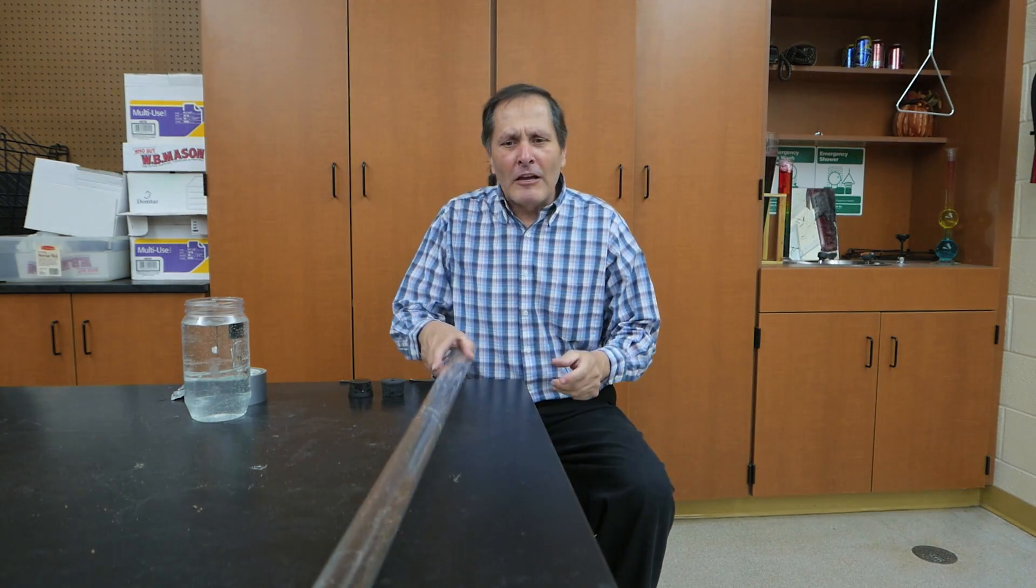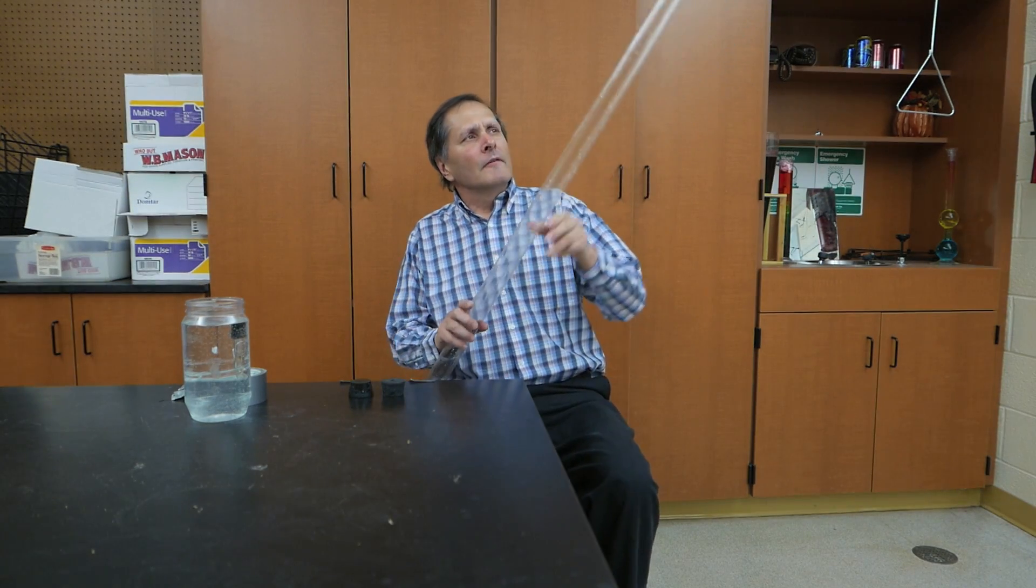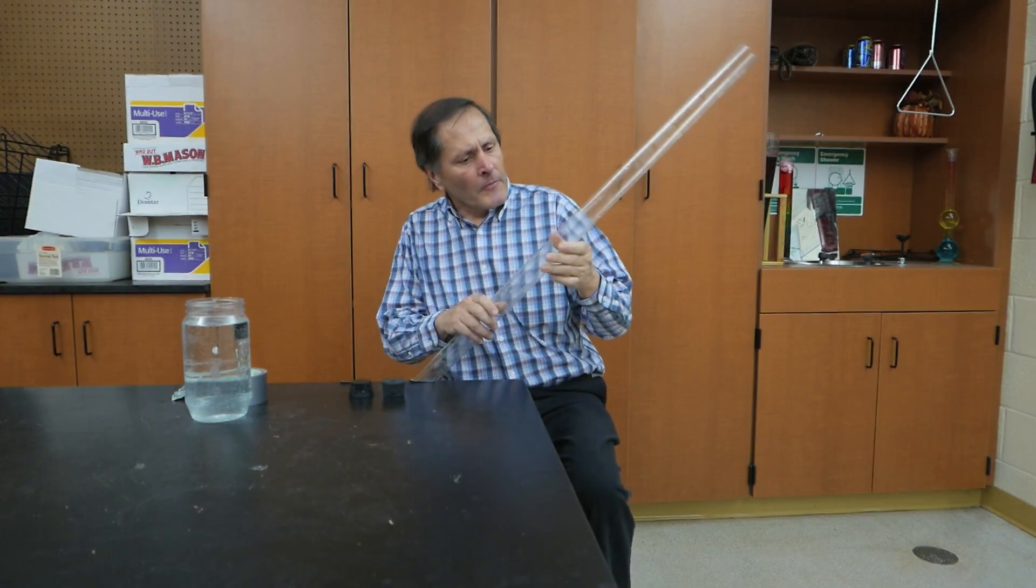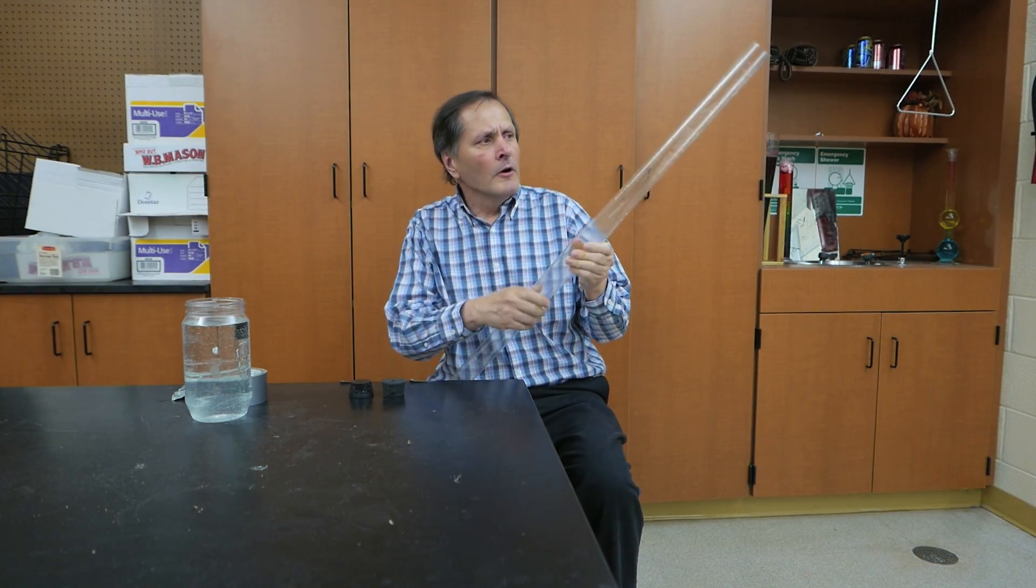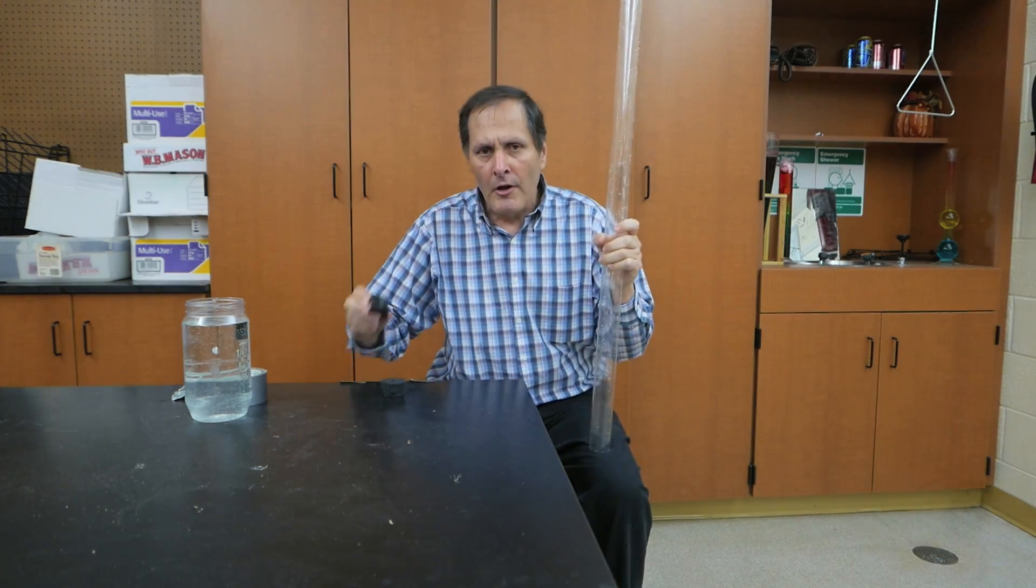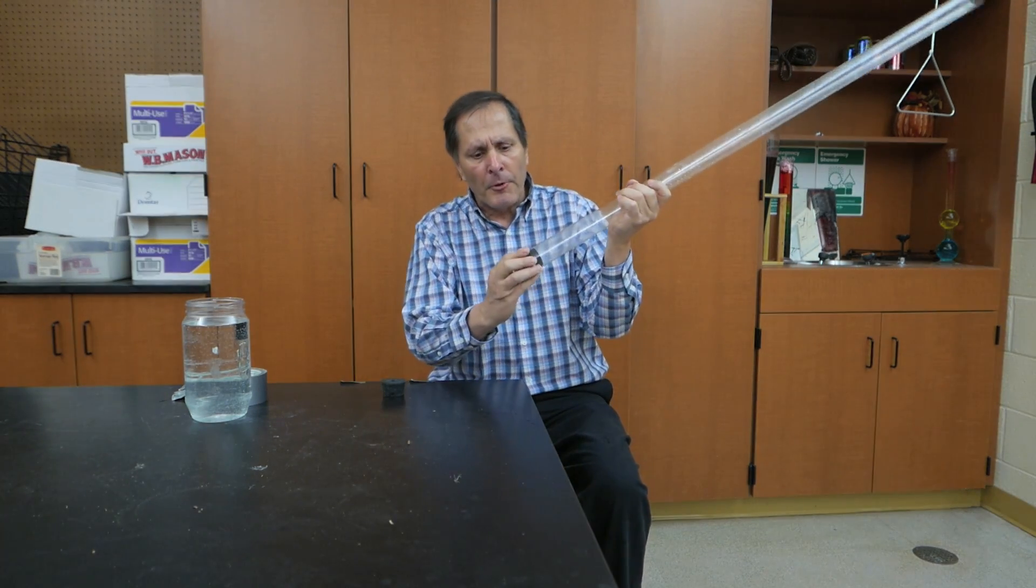Now I think one of my favorite containers to make Cartesian divers in is this four foot long plastic tube that's used to protect fluorescent lights. It's actually flexible, and it's open at both ends. So I'm going to need two number nine stoppers. The one stopper is solid, and I'm going to put that at the bottom.